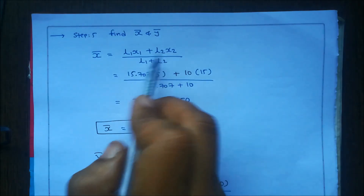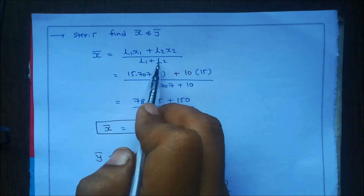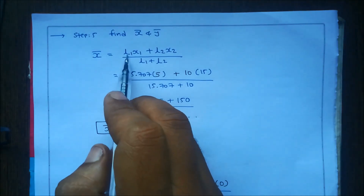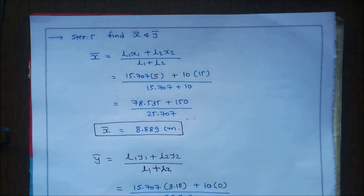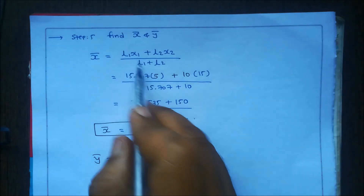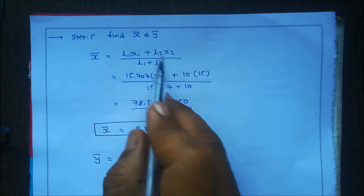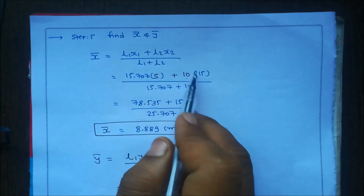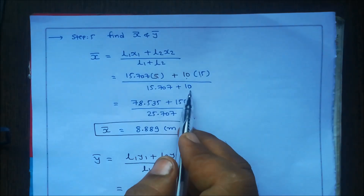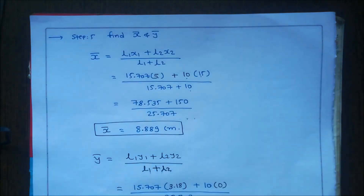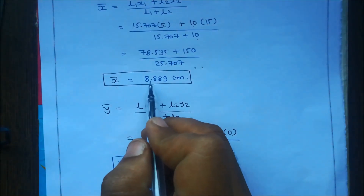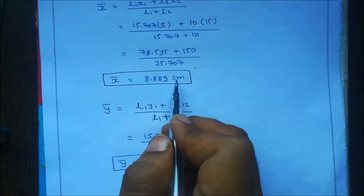Then we find X-bar and Y-bar. The formula for X-bar is: X-bar = (L1·X1 + L2·X2) / (L1 + L2). Substituting: L1 = 15.707, X1 = 5, L2 = 10, X2 = 15. Solving this equation gives X-bar = 8.889 cm.